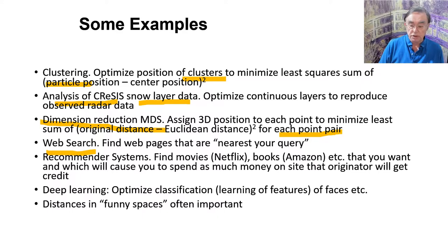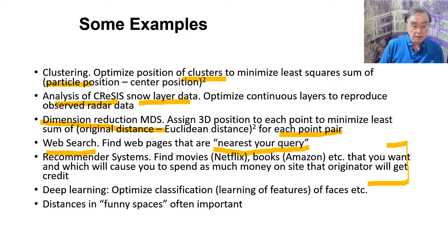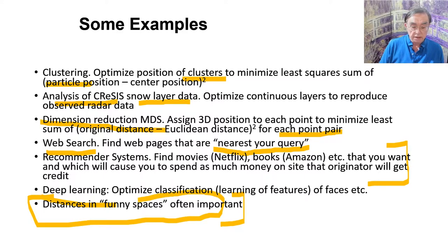If you do Google or Bing web search, that finds the web pages nearest your query — so the thing to be optimized is satisfying your query. Recommender systems, like Netflix or Amazon, want you to spend as much money as possible, finding movies or books nearest your interest, combining those two goals in some way that is not entirely clear. In deep learning, we are optimizing the learning of features of faces and things like that. All of this needs to define distances or vector spaces, which will be discussed in a later lesson.